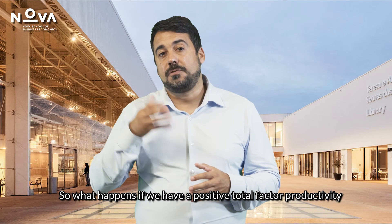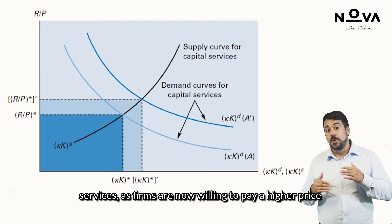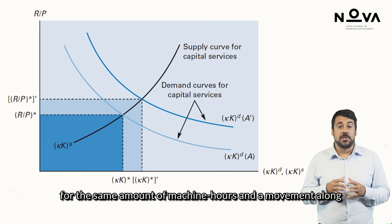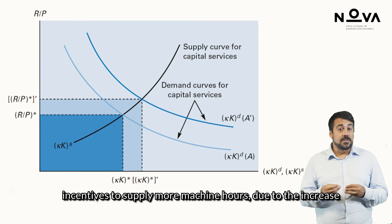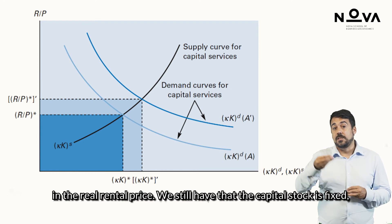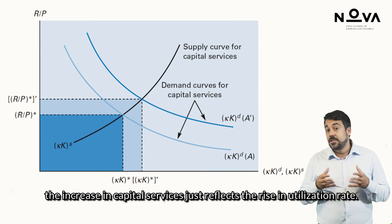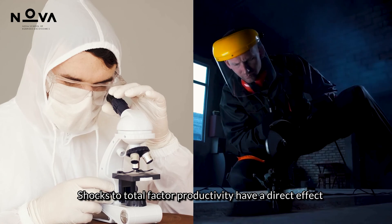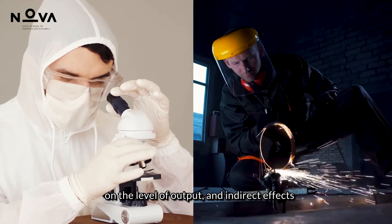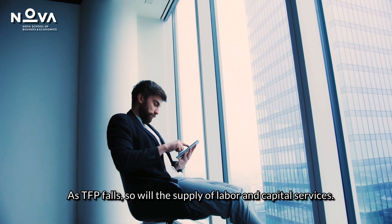So what happens if we have a positive total factor productivity shock? As before, we will have a shift in the demand for capital services, as firms are now willing to pay a higher price for the same amount of machine hours, and a movement along the capital supply services curve, as households now have the incentive to supply more machine hours due to the increase in the real rental price. The capital stock remains fixed; the increase in capital services just reflects the rise in utilization rate. We now have three reasons why real GDP rises in a boom and falls in a recession: TFP shocks have a direct effect on the level of output, and indirect effects through changes in the amount of labor and capital services. As TFP falls, so will the supply of labor and capital services.